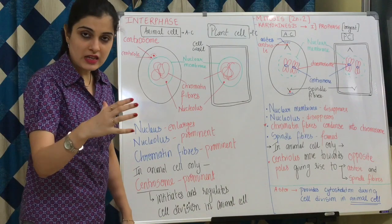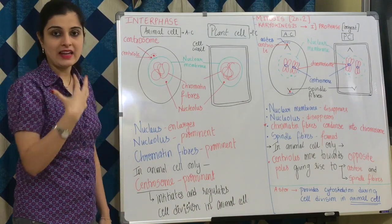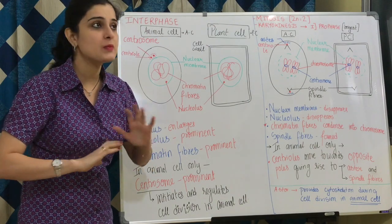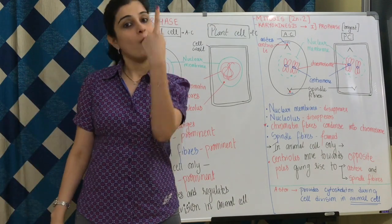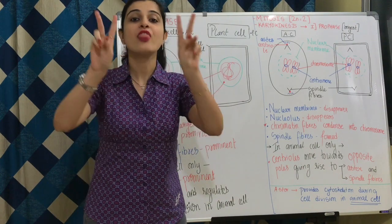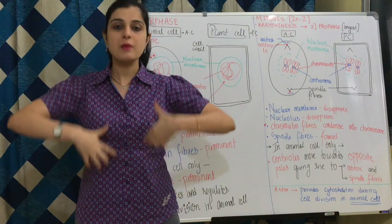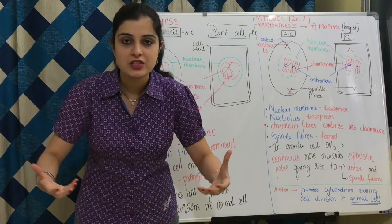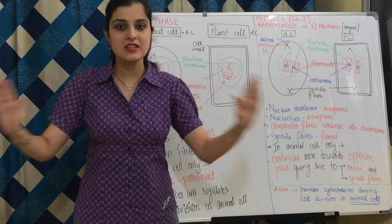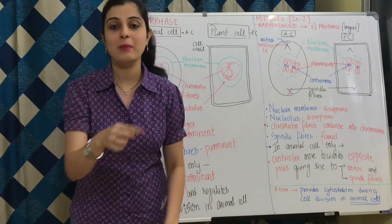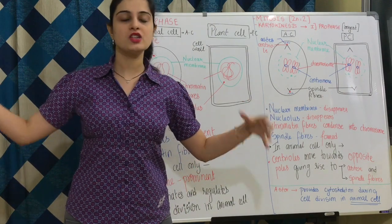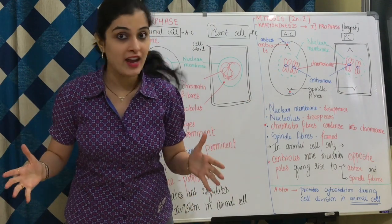If you see the cell from outside during interphase, you will not exactly see any specific changes because the cell is preparing itself to undergo division and ensure equal distribution of each and everything in both daughter cells. So everything is going to enlarge and become way too prominent.